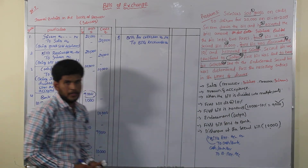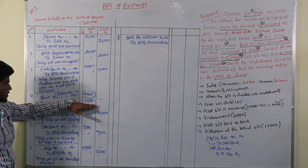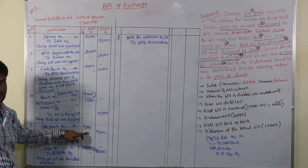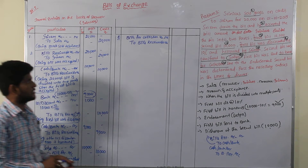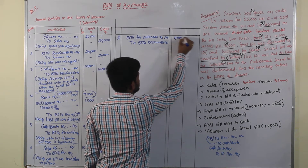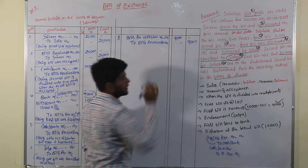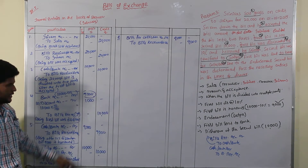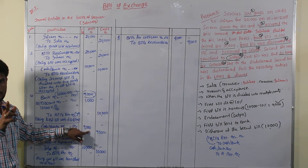We have to note here: 10,000 bill was discounted, and the 9,000 bill was endorsed. So only the 9,000 bill is going to be sent for collection. We have to mention only 9,000. No need to enter 10,000 because that transaction is already accounted for — we endorsed the 9,000 bill.